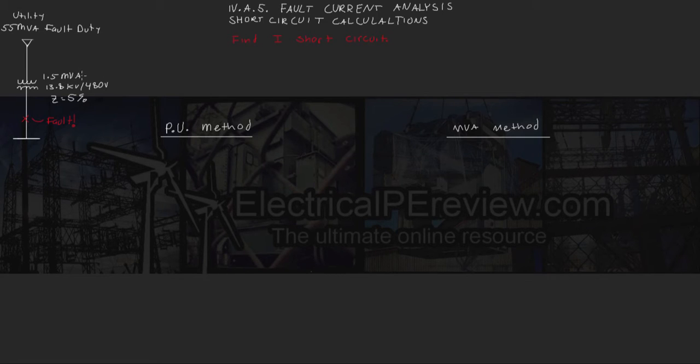We've got a 1.5 MVA transformer, it's a 13.8 kV step down to 480 volts, and the transformer impedance is 5%. So let's find the fault.